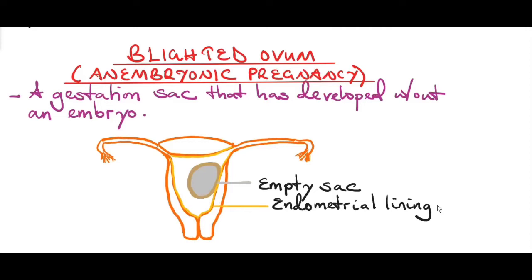Hi guys, welcome back. In this video I'm going to discuss a blighted ovum. This is a continuation on our topic of missed miscarriage. So what is a blighted ovum? A blighted ovum is a gestational sac that has developed without an embryo. It's also known as an anembryonic pregnancy.